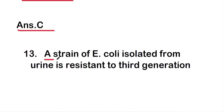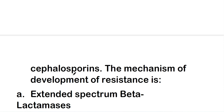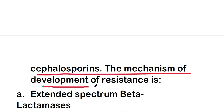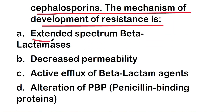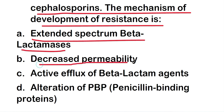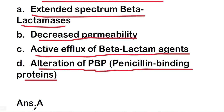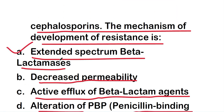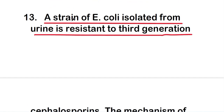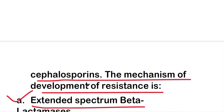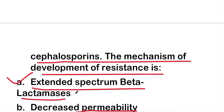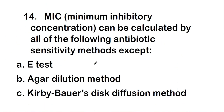The next question: a strain of E. coli isolated from urine is resistant to third generation cephalosporin. The mechanism of development of resistance is extended spectrum beta-lactamase, decreased permeability, active efflux of beta-lactam agent, or alteration of penicillin binding proteins (PBP). The right answer is option A — extended spectrum beta-lactamase.